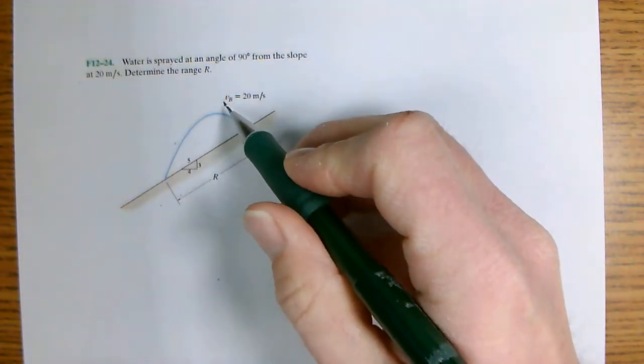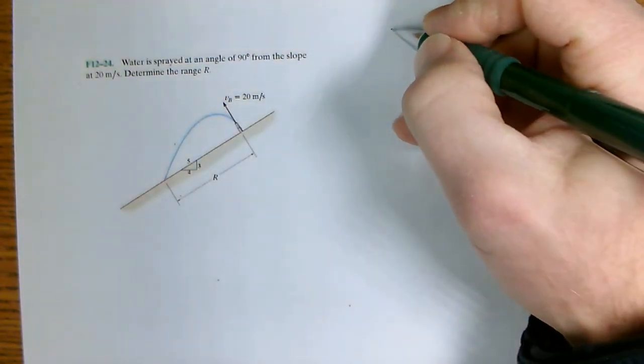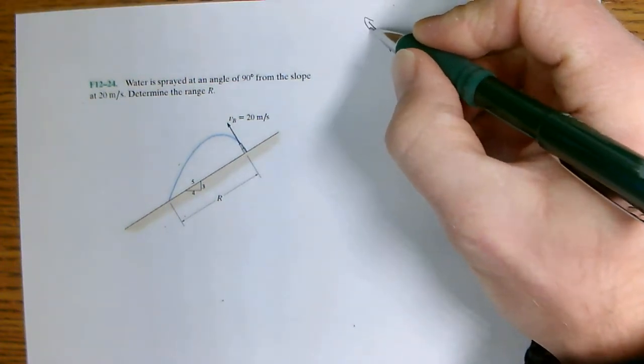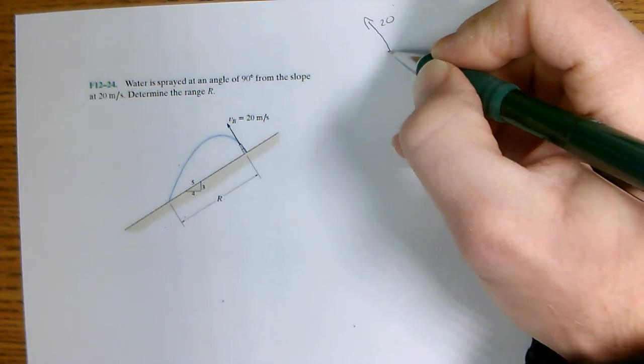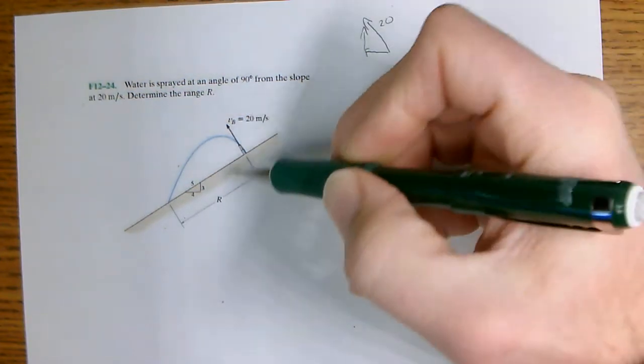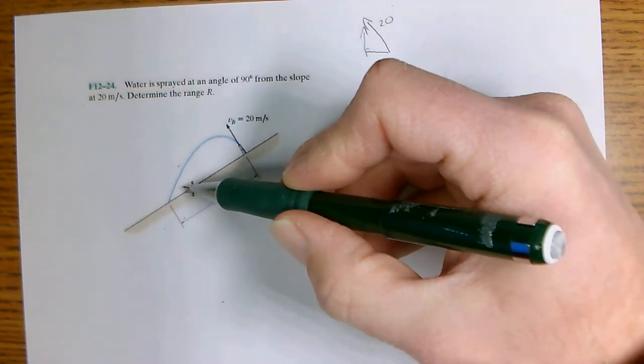First we need to break down the initial velocity into components. So it shoots off at 20 miles per hour, and if we look at here this is a 3-4-5 triangle.